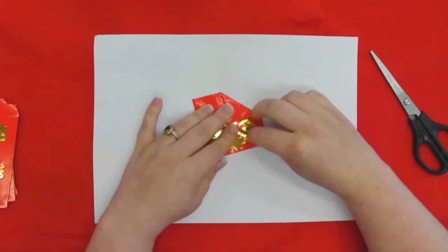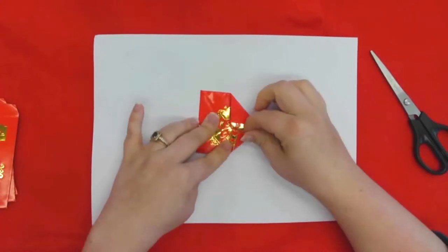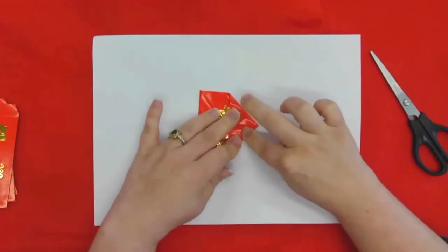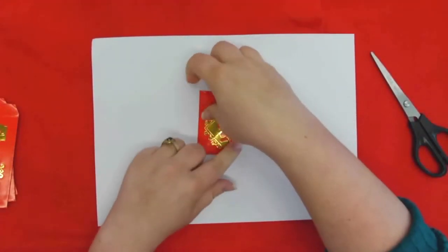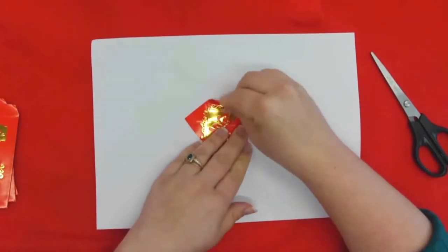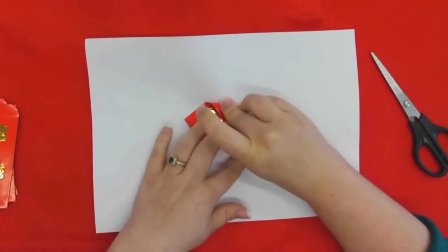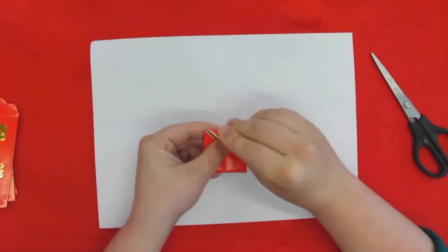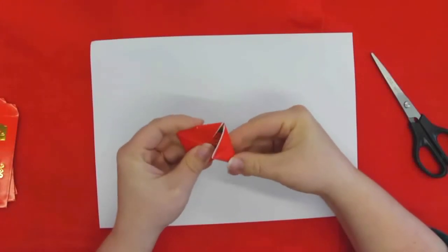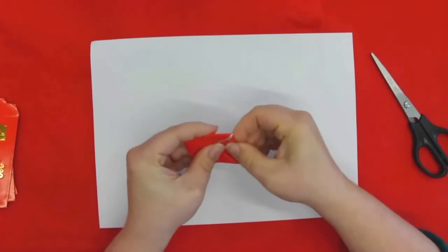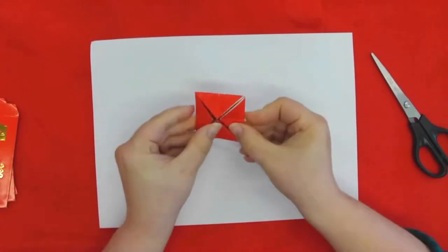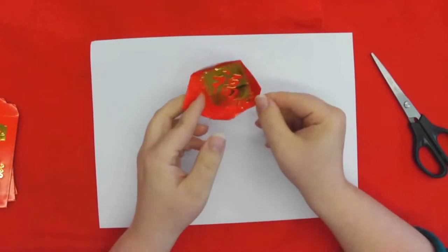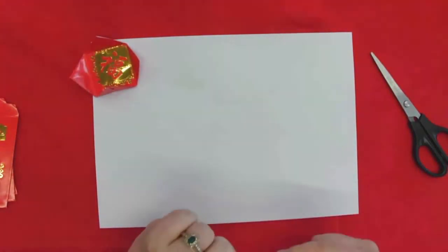So you're going to create four little triangles. Okay, third one, and one more. Okay, pinch down. Alright, and then when you open it up you can see that it's basically a square with four triangles on each corner. Those triangles are what we are going to join together.